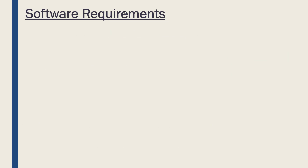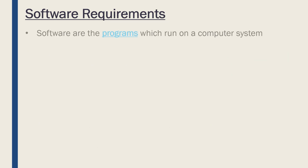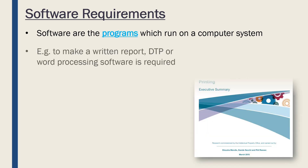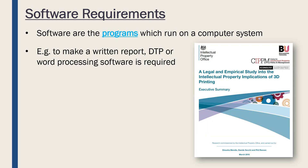Our second requirement is software. Software, as a counterpoint to hardware, is the programmes running on your computer — running on the hardware. For example, if we're wanting to present via a written report, we're going to need to use software to make this unless we're wanting to write it out by hand. Desktop publishing, DTP, can be used if you want a fancy report, or just normal word processing software, but you need some software on a computer to actually write.